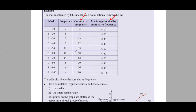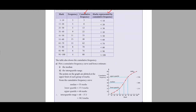On the y-axis there will be cumulative frequencies and on the x-axis you will use the marks column. Now you can see both the table and the graph here. The value 10 on the x-axis corresponds to a cumulative frequency of 3, so mark a point at 3. Then 20 on the x-axis corresponds to 8, so mark another point at 8. You will observe this curve keeps on rising.